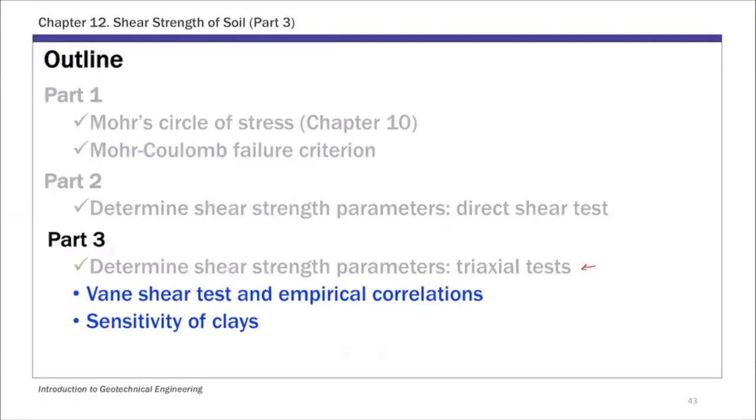So for today's lecture, this is the last two bullet points for chapter 12, part 3. I'm going to talk about the Vane shear test empirical correlations, and also very briefly I will touch on the sensitivity of clays. And for both Vane shear tests and empirical correlations, we are actually focusing on this undrained shear strength parameter of clays. So something we discussed when we're talking about the CU unconsolidated undrained and UU unconsolidated undrained test.